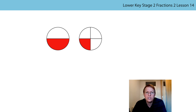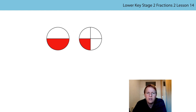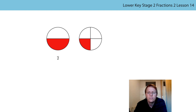Now on to today's lesson. We're going to be using lots of the maths you've been learning in the last few lessons, so let's think carefully about that. Let's start by looking at this first circle. What fraction of the circle has been shaded? How many parts has the whole been split into? That's going to be our denominator — it's two. And how many of those parts have been shaded? One. So the fraction is one half.